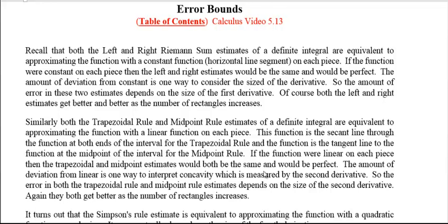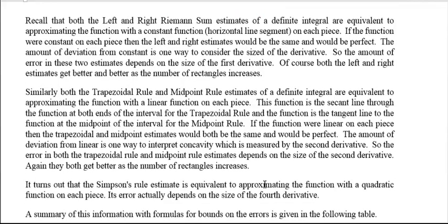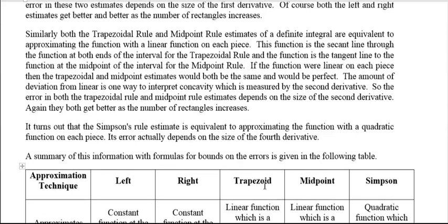So it turns out that Simpson's rule is equivalent to approximating the function with a quadratic function on each piece, where it agrees at both ends and the middle. Again, I'm thinking of that as one interval, whereas some people would think of that as two intervals. And its error actually depends on the size of the fourth derivative.